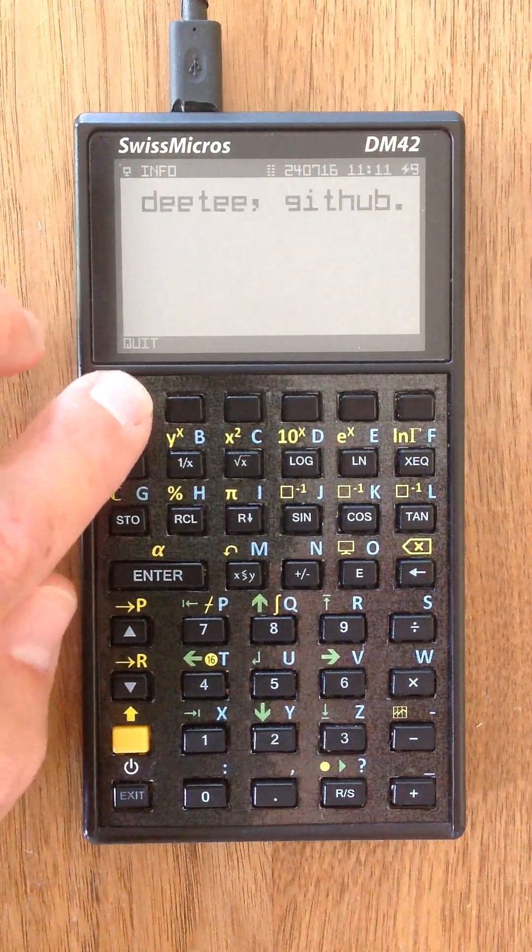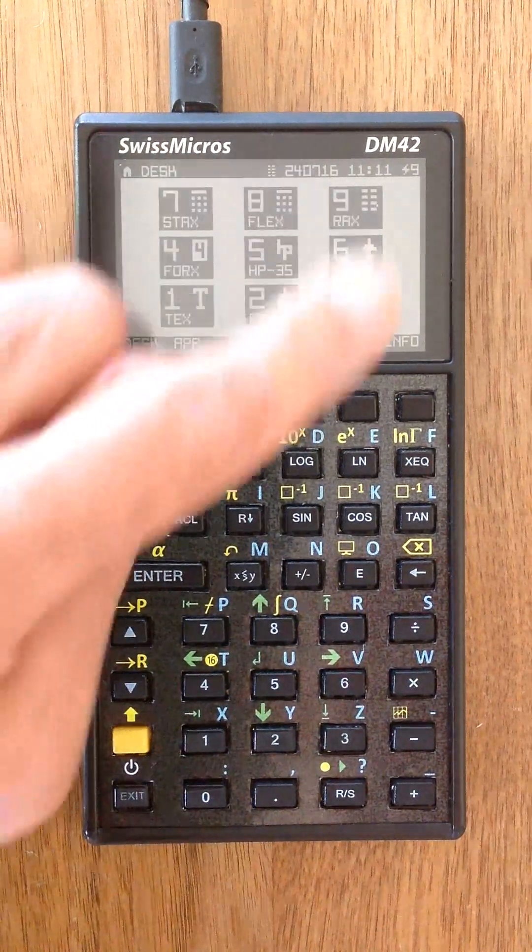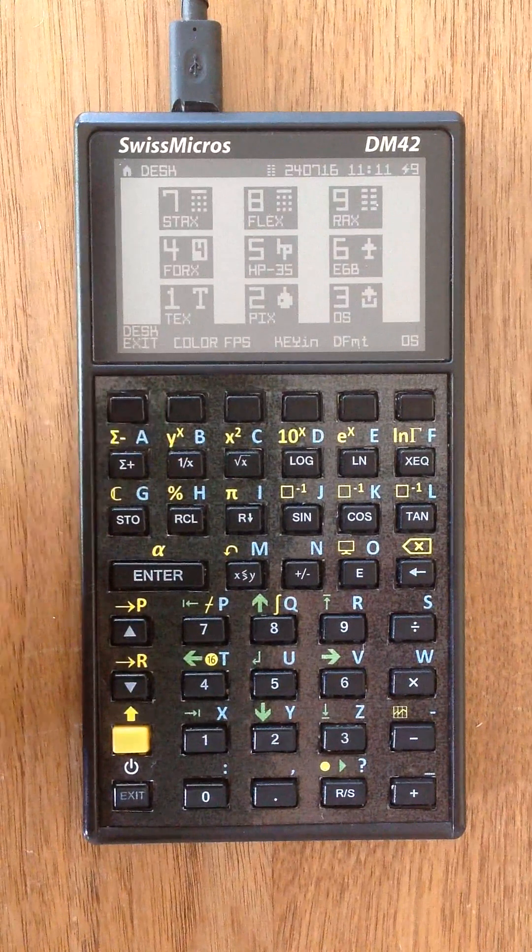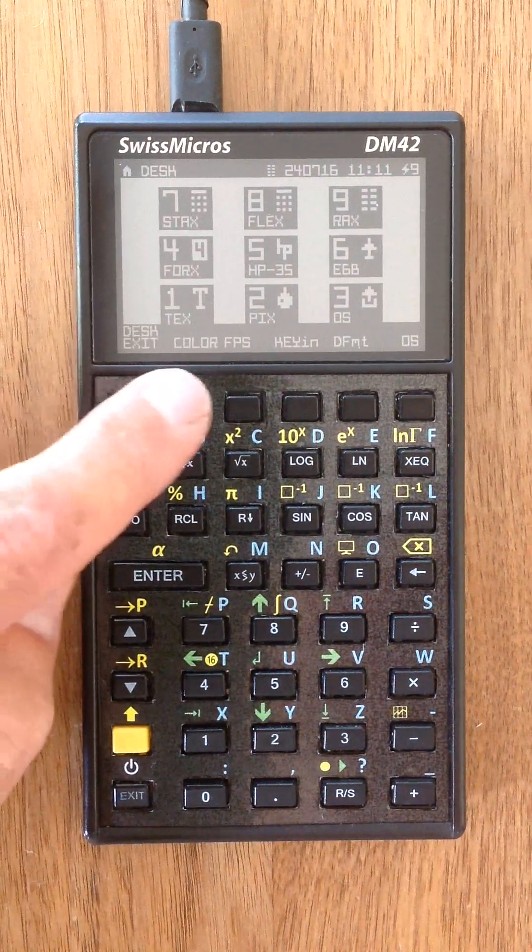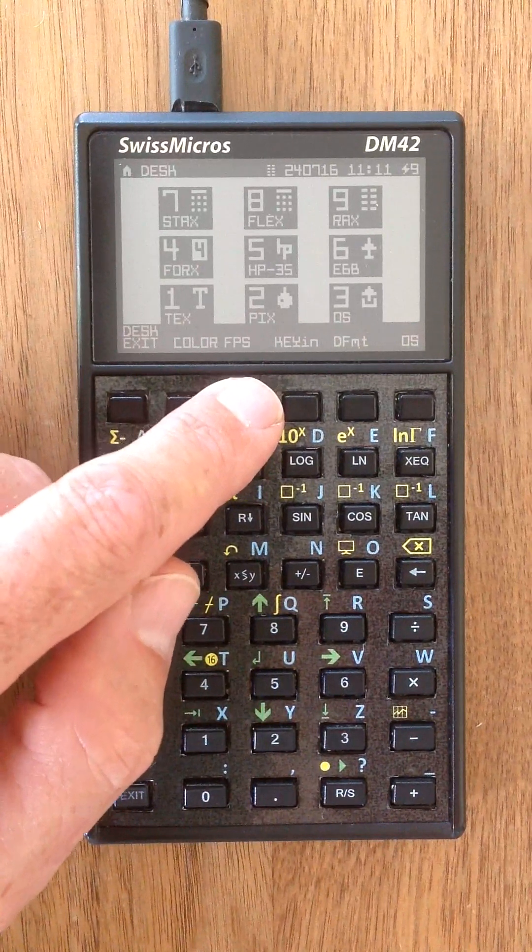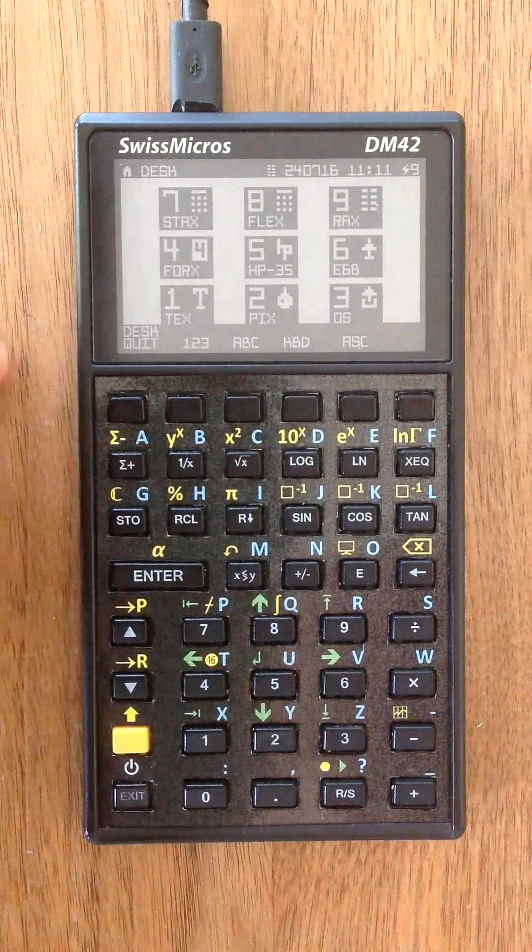So let's go to the application. This is the user interface or application launcher where you can quickly launch any application or even do some settings like background color, speed, the frames per second, or you can change the key input method.